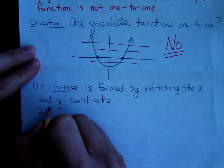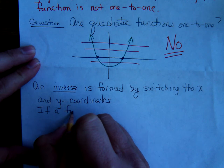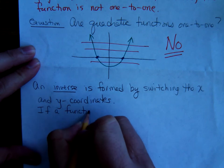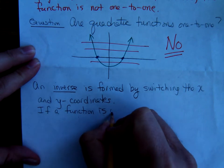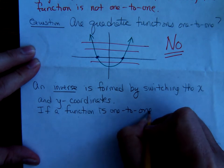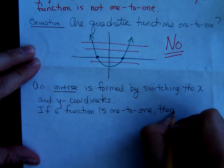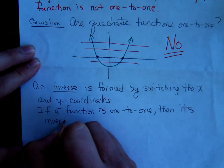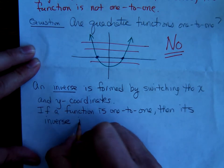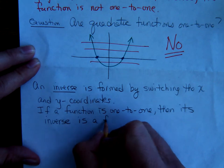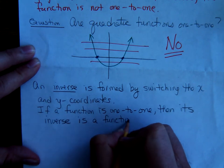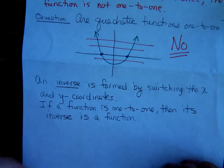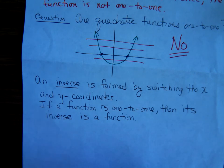If a function is one-to-one then its inverse is a function. That's going to be very significant. If a function is one-to-one then its inverse is a function.